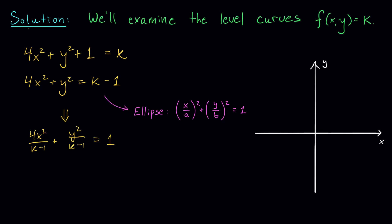To make this look even more like the equation of an ellipse, I'm going to square root my coefficients and lump them into the x² and y² terms. This gives me (2x/√(k-1))² + (y/√(k-1))² = 1.